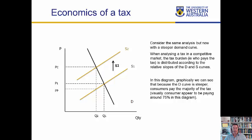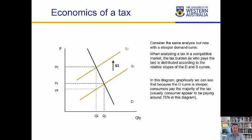While that makes sense graphically, let's think about it intuitively. We've steepened the demand curve substantially, and consumers are paying most of the tax. What we saw in a previous example was that cigarettes — addictive goods, goods that consumers absolutely need to have — have very steep demand curves.